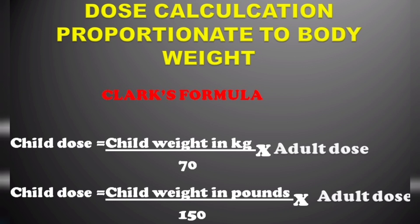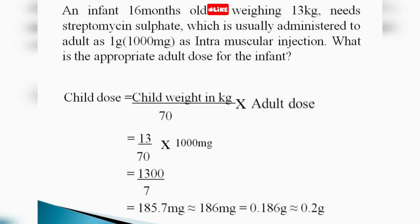If the weight is given in pounds, the divisor is 150. If given in kg, the divisor is 70. Example: an infant 16 months old weighing 13 kg needs streptomycin sulfate, which is usually administered to adults as 1 gram by intramuscular injection. Using Clark's formula: 13 divided by 70, multiplied by 1000 mg, equals 1300 divided by 7, which gives 185.7 mg — approximately 186 mg, or 0.186 g, which we can round off to 0.2 g.